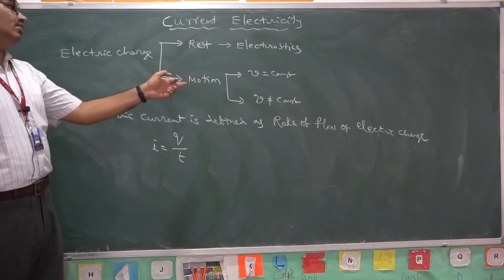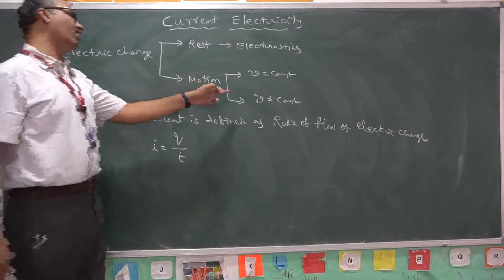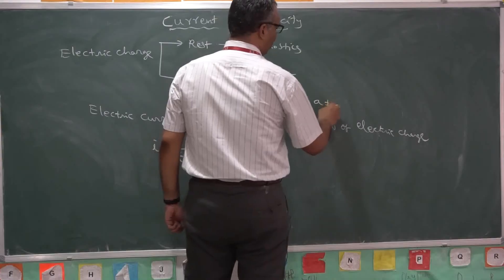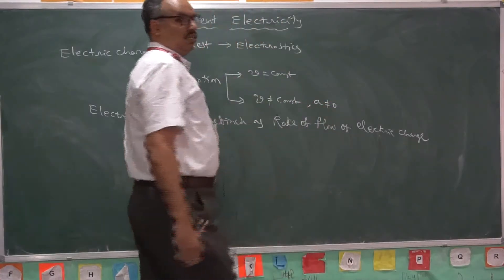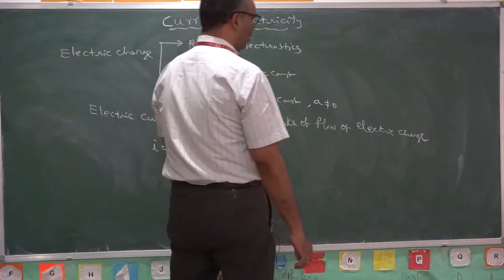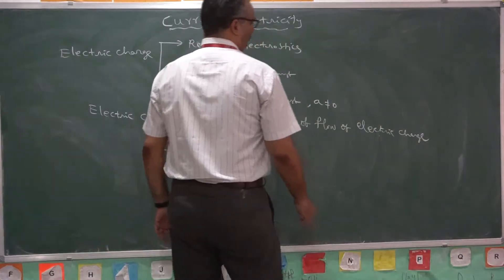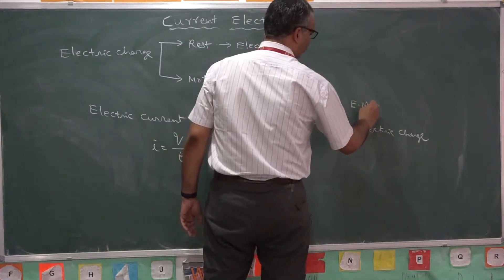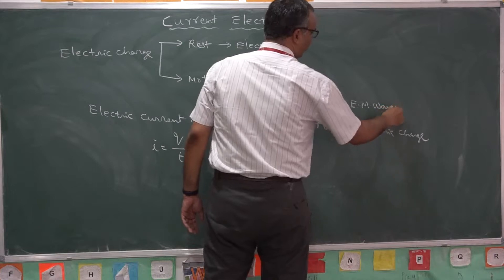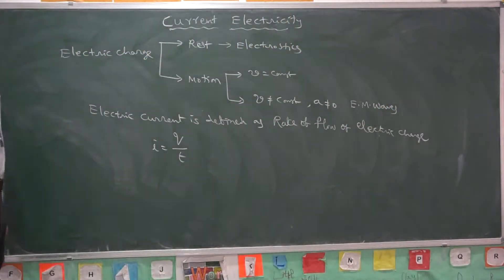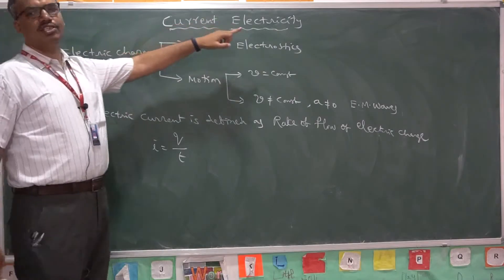If the charge moves with variable speed, that means it possesses non-zero acceleration, then it creates some magnetic field, hence it generates electromagnetic waves. We will study about these electromagnetic waves in coming lessons. In this current lesson, we are going to study about current electricity.